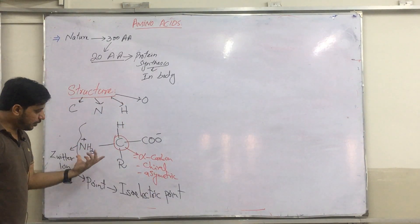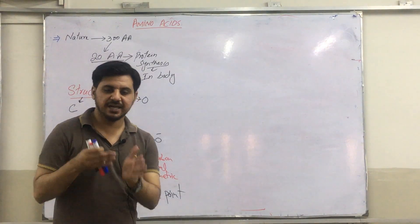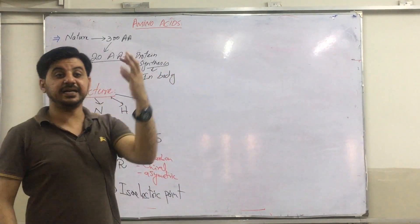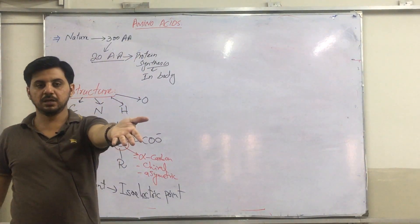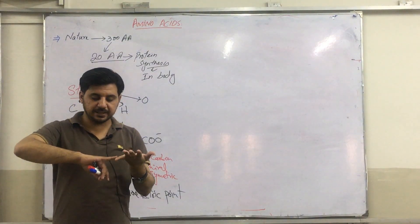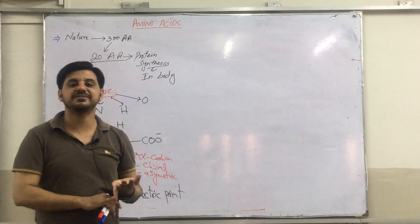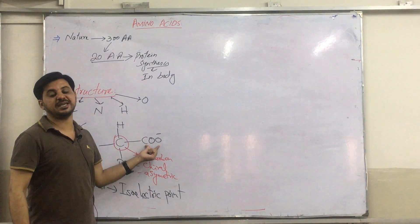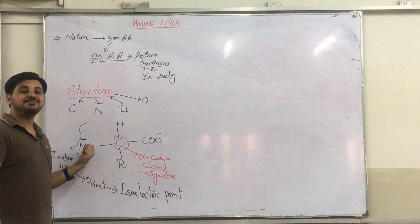Now, this amino acid is an amphoteric compound, which means it can act as positive as well as negative. We can say that it can accept the proton or donate the proton. In other words, it can behave as an acid or as a base. If this portion is working, then it is behaving as an acid. And if this portion is working, then it is behaving as base.